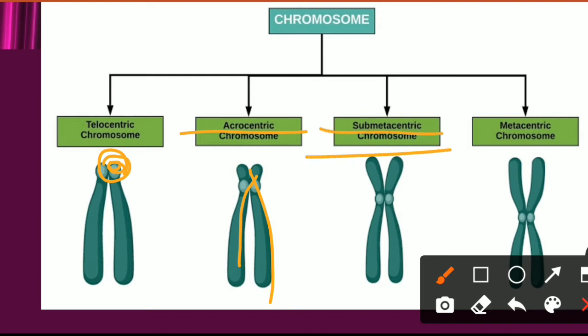Next is the sub-metacentric chromosome. In this, the centromere is close to the center, and the chromosome has two unequal arms, resembling an L shape. So the chromatids of this chromosome are unequal — they are not equal — and they represent an L shape.